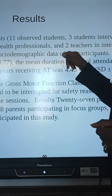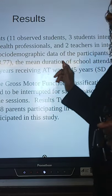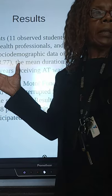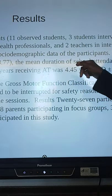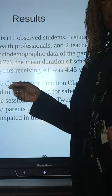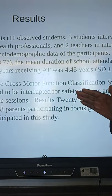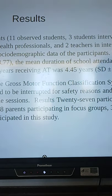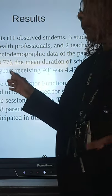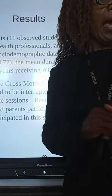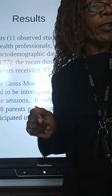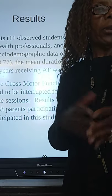Table 1 displays the socio-demographic data of the participants. The average age of the children was 11 years old. The duration of school attendance was almost 6 years, and the mean number of years receiving aquatic therapy was 4 and a half years. The most predominant level of the gross motor function classification system was 42.8%. None of the sessions were interrupted, and none of the children were reported to have adverse effects during the swim sessions.